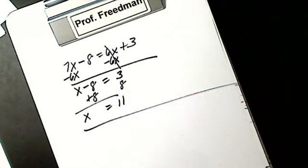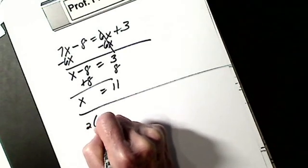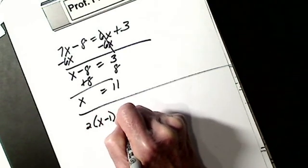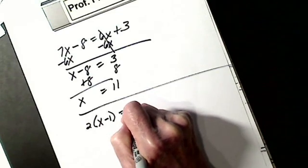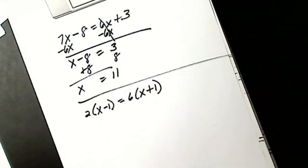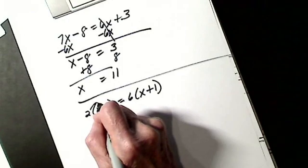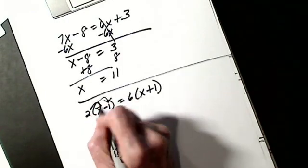So now all we've got to do is add distributive property. Let's say I have 2 times (X minus 1) equals 6 times (X plus 1). So I distribute my 2 through the parentheses.